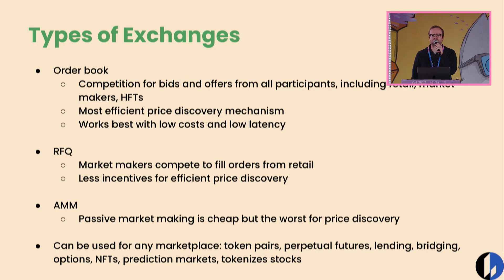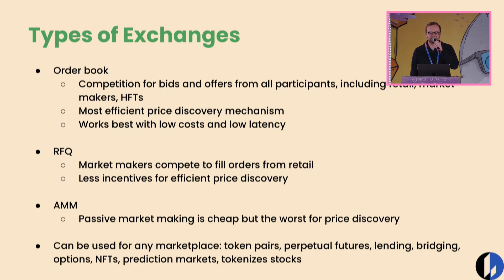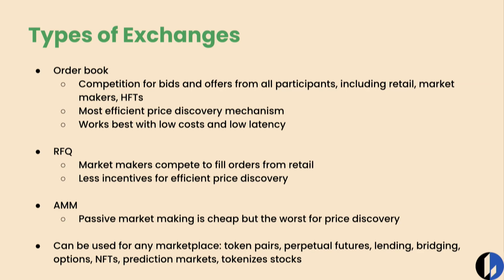But this type of exchange works best when you have low costs and low latency. In the crypto world, most applications of order books have been centralized until the technology we're going to talk about today. The order book model is, from a finance and market efficiency perspective, the most efficient way to design an exchange. Some other approaches are an RFQ, where basically market makers compete to fill orders from retail. This has some good properties, but there's less incentive for efficient price discovery because the market makers aren't trading with each other.